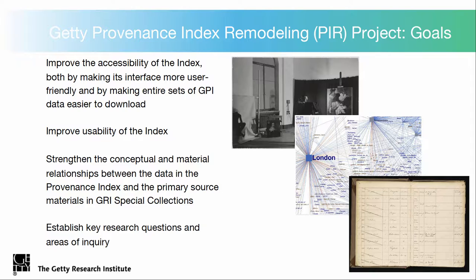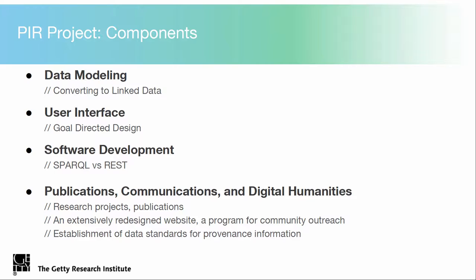Hence the Getty Provenance Index Remodeling Project, or PIR Project. Its four main principal goals are: increasing accessibility and usability at the top — making it easier to use in its interface but also making the data inside of it easier to get at. We also want to make sure that this new technological infrastructure and set of tools are tied to and support the changing field of art market research — for example, at the GRI, connecting or strengthening the connections between the provenance index and what's in our special collections in the library.